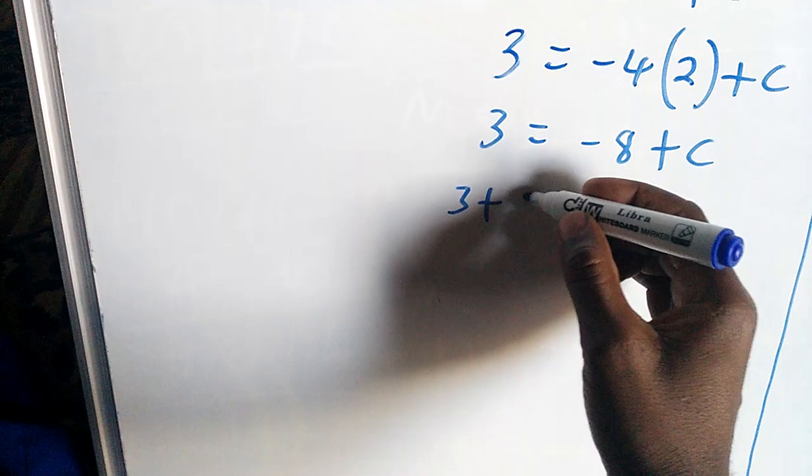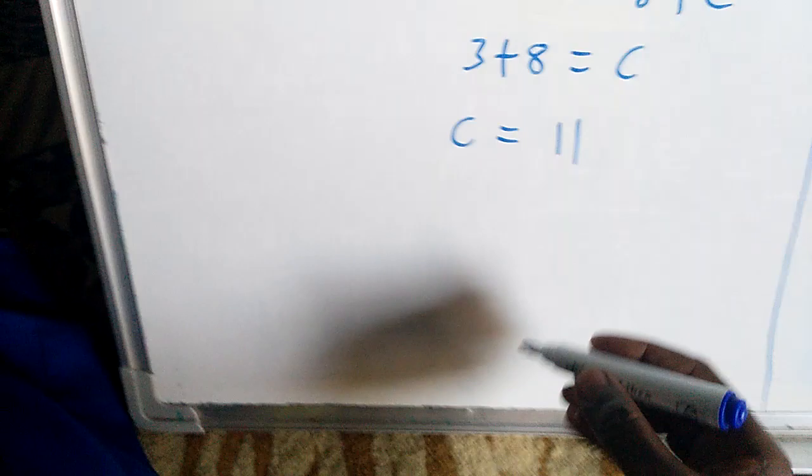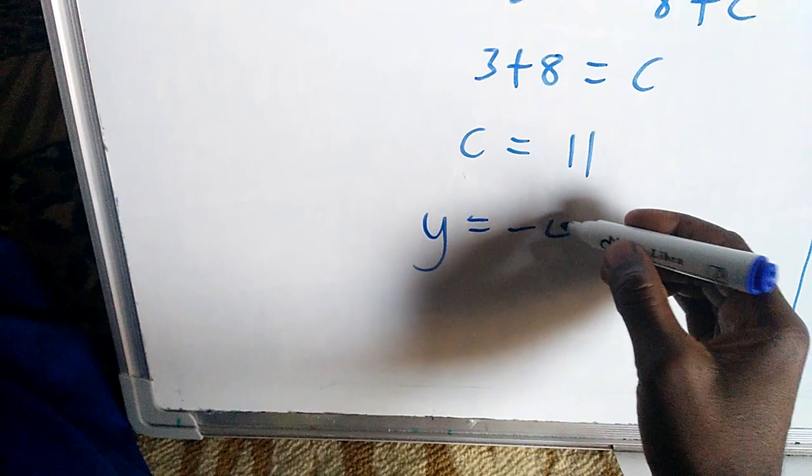Now that we know the c, we have m, we can connect to make the equation of the line. y is equal to negative 4x plus 11. That will be the linear equation.